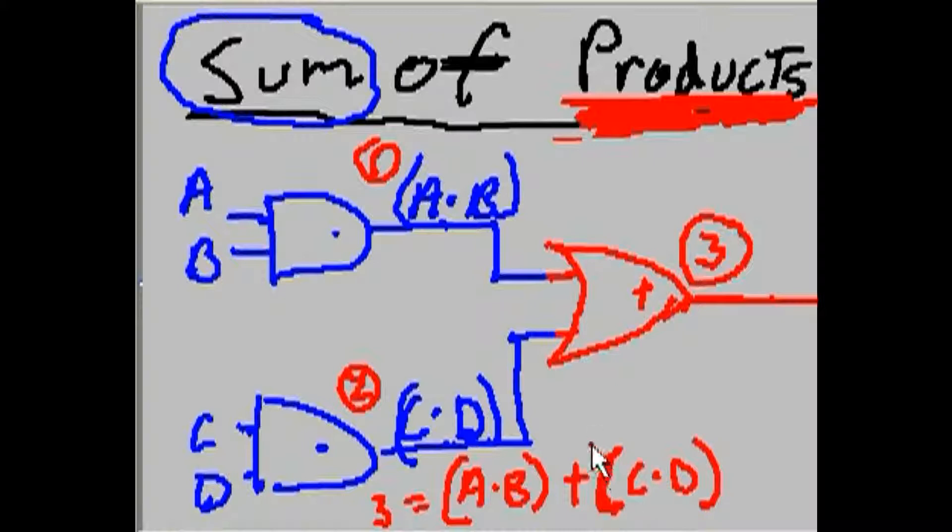It's A ANDed with B ORed with C ANDed with D. And here you have, oh, la, la, la, what do you have? You have the sum of products. The sum of products. The sum of products. Well, what do you know?